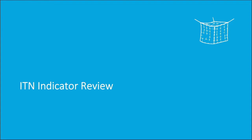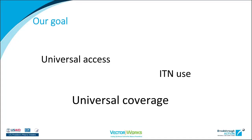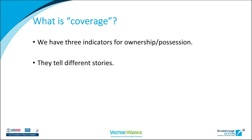Good morning and good afternoon, everybody. We will first go through a few of the indicators that we're using here. We've got a few different terms used interchangeably in terms of our goal — universal access, universal coverage for ITNs — but ultimately the goal is to have people using them. When we talk about coverage, there are actually three different indicators for ITN coverage, or four if you include ITN use. They tell very different stories, and we'll walk through these right now.